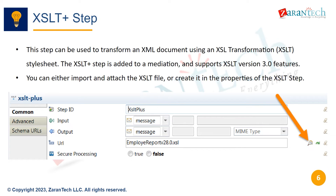The XSLT Plus step can be used to transform an XML document using an XSL transformation stylesheet. The XSLT Plus step is added to a mediation and supports XSLT version 3.0 features. You can either import and attach the XSLT file, or create it directly in the properties of the XSLT step.